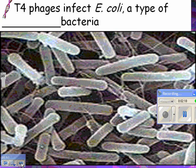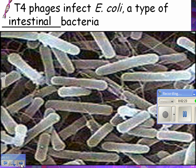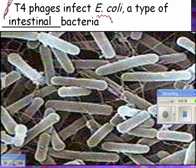T4 phages infect E. coli, which is a type of bacterium found in the intestine — it's an intestinal bacterium, so everyone has E. coli in them. There are some strains of E. coli that are pathogenic and can hurt you, so that's one reason to boil water if you're not sure it's clean. If the government tests your drinking water and finds E. coli, that means it's an indicator organism — it's very likely that water was contaminated with fecal matter from people, cows, or something similar.